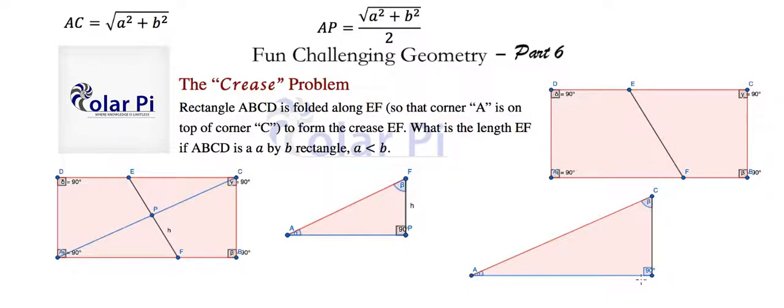We also know AB is of length b. Furthermore, we know that CB, or BC, is of length a.